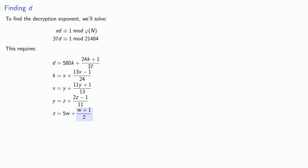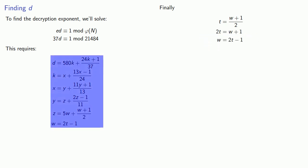Finally, we want w plus 1 over 2 to be a whole number, so we'll let that be t and solve for w. And that gives us a system of equations that we can work back to find our decryption exponent.